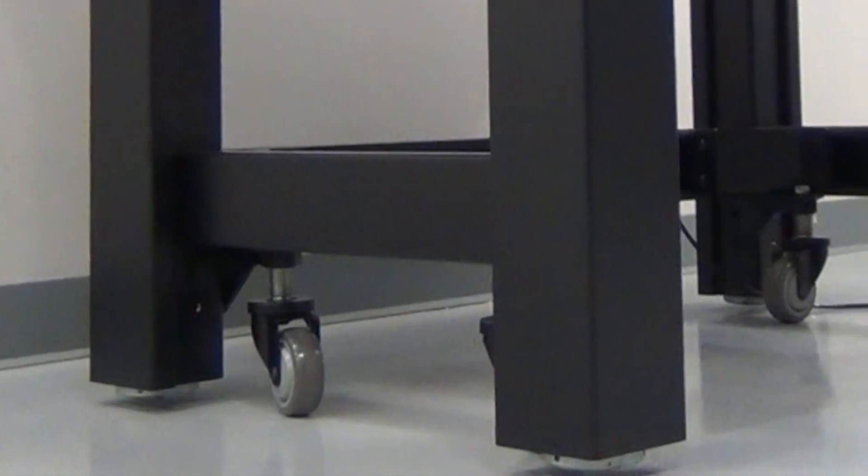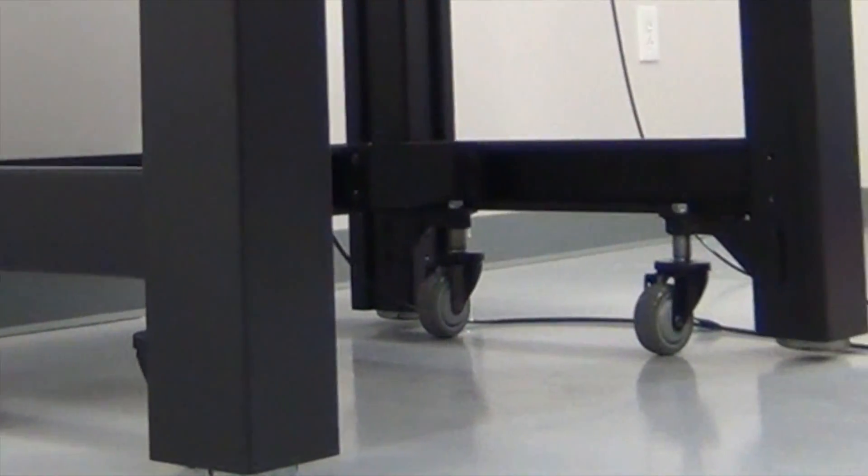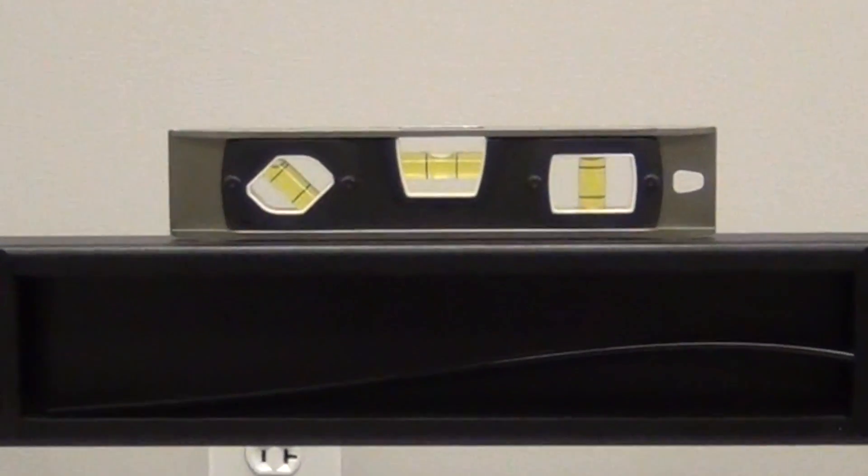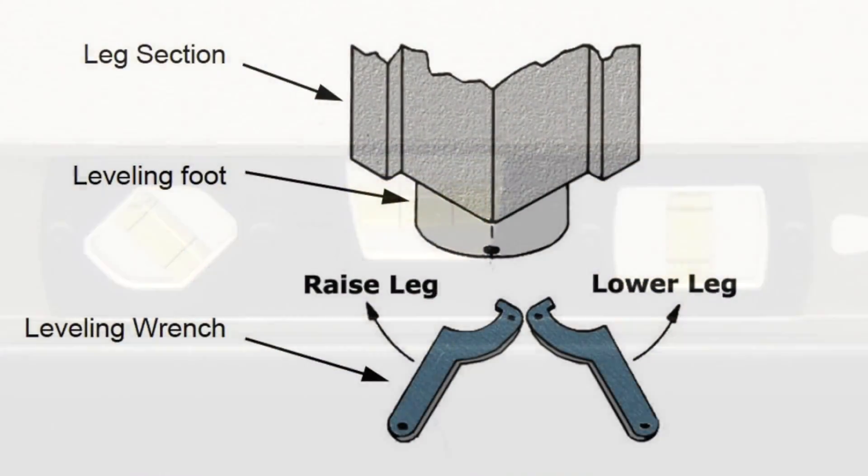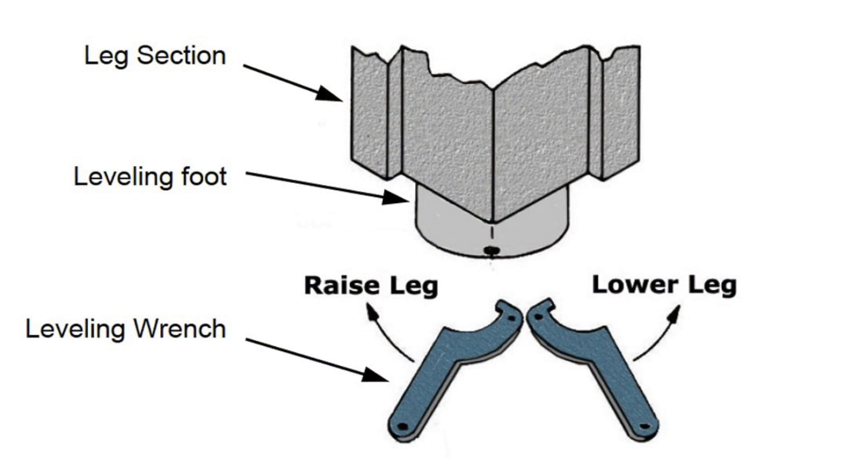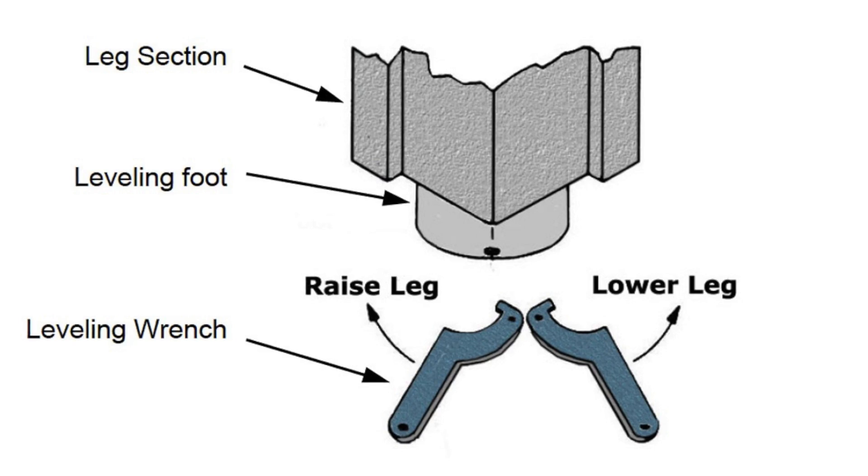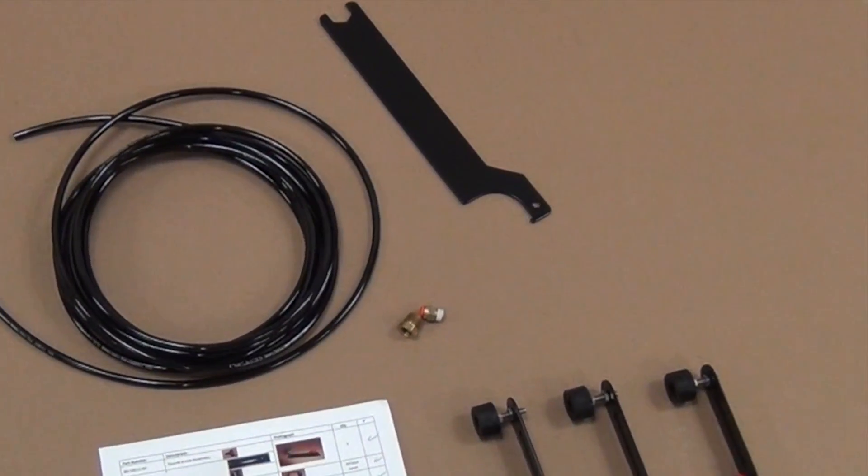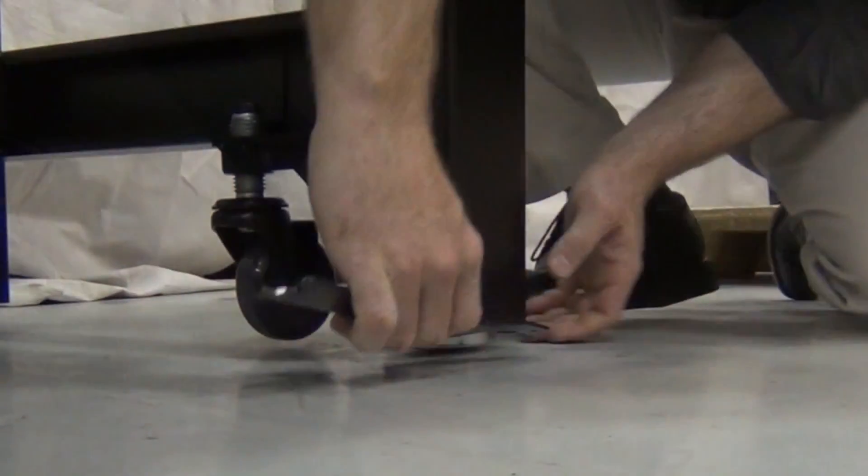With the frame positioned, the leveling foot on the bottom of each leg can be adjusted and the frame leveled using a carpenter's level. The leveling foot has dimples which can be turned using the spanner wrench provided in the hardware bag. The leveling foot is shipped in the middle of its five-eighth inch total throw.